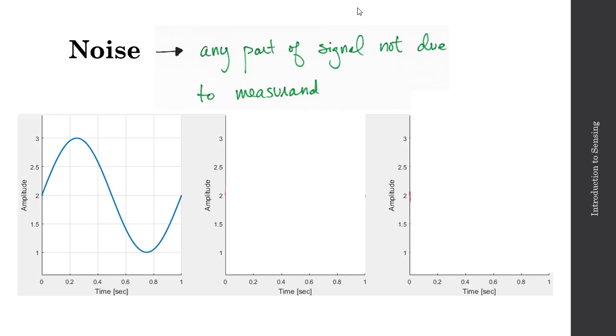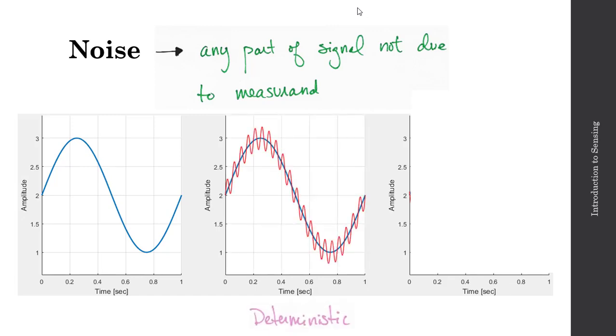So at left here, I have a sine wave. I'm looking at one period of the sine wave. And there's no noise on this signal. So this might describe the true measurand that I'm attempting to sense, that I'm attempting to measure. Now, one case of noise might be something that's fairly deterministic. So this might be a periodic signal induced by some electromagnetic radiation.